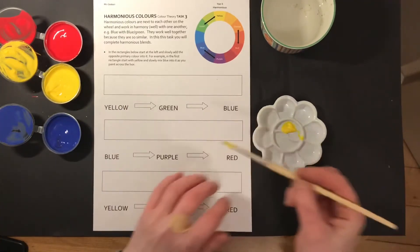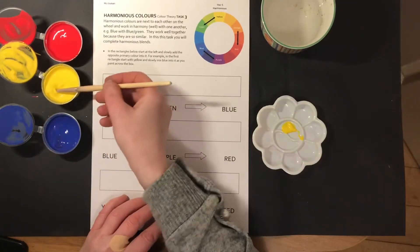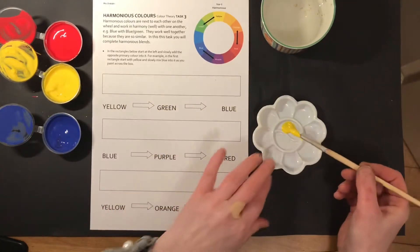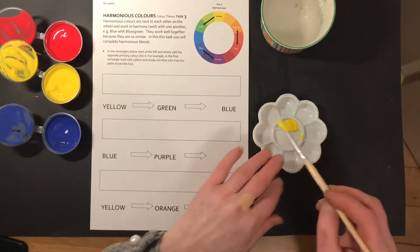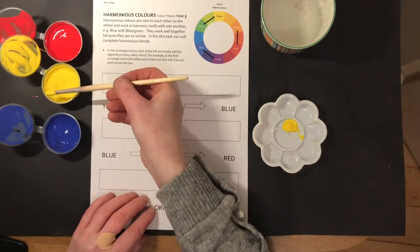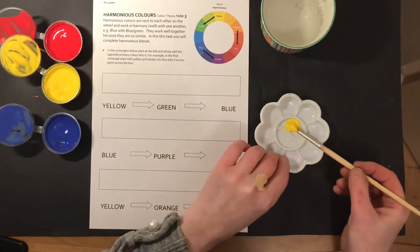You always start with your lightest color, so our lightest color here is yellow. We're going to add yellow first to the strip, then we're going to gradually add blue to it, which is going to take it through yellow to yellow-green to green to blue-green and then finally to blue.